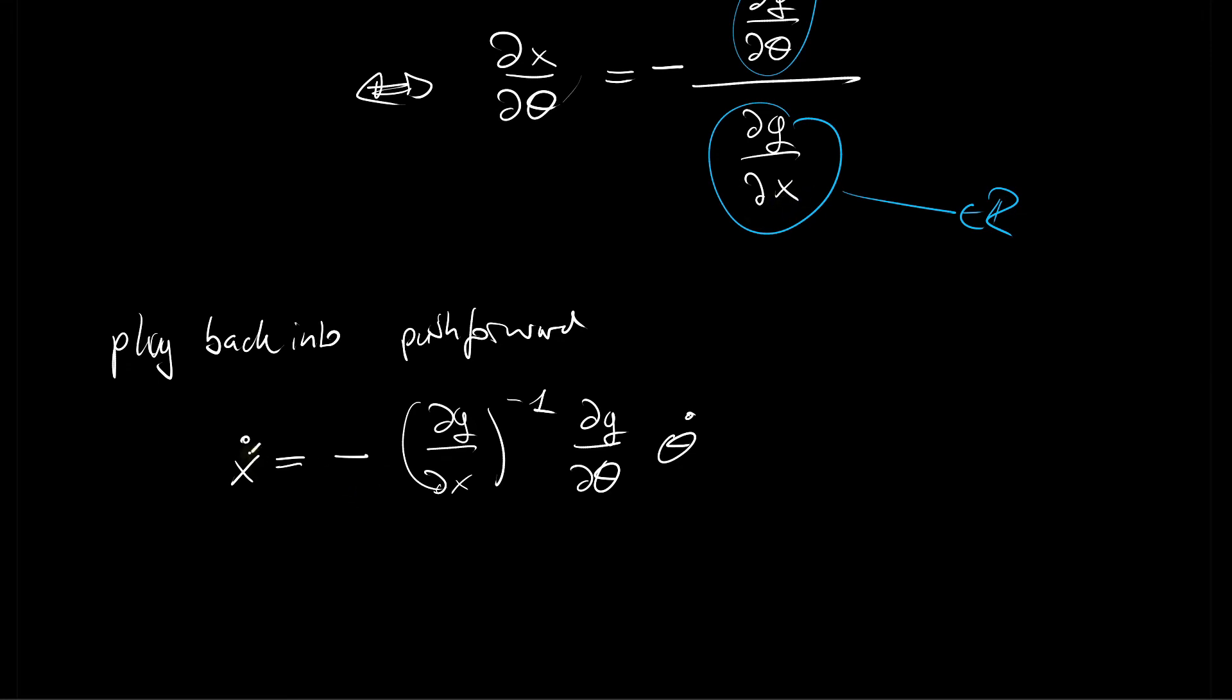So we propagate the tangent information from theta dot to x dot by scaling it first with the derivative of the optimality condition with respect to theta evaluated at the solutions from the forward pass and then scale it again with the inverse of the derivative of g with respect to x evaluated at the solutions from the forward pass.